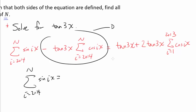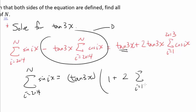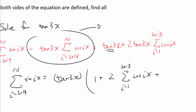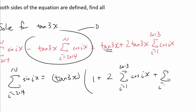A quick look at this equation shows us that everything has tangent of 3x attached to it except the first summation. So we can leave the first summation on the left side and move everything else to the right. Once we factor out tangent of 3x, we get: 1, plus 2 times the summation from i equals 1 to 2013 of cosine of ix, plus the summation from i equals 2014 to n of cosine of ix.